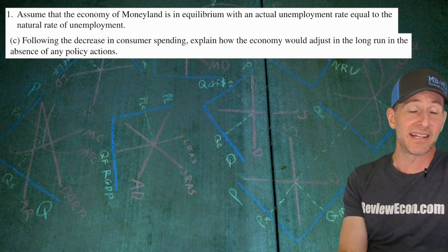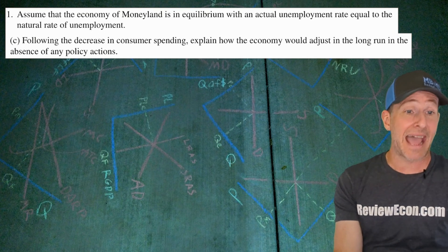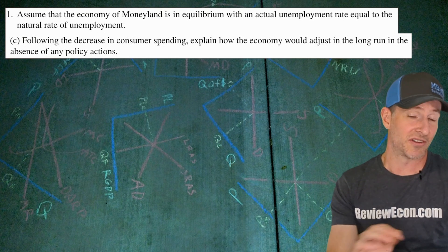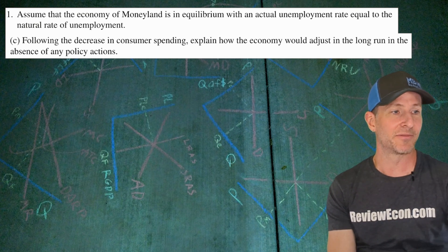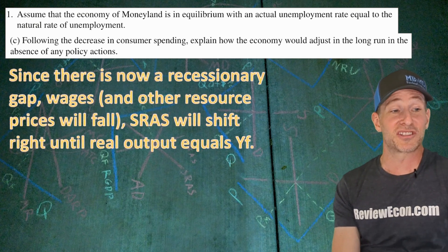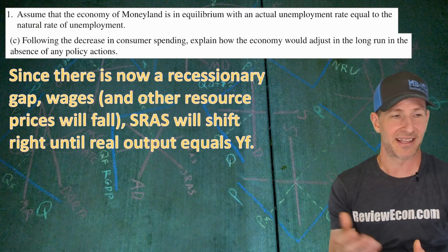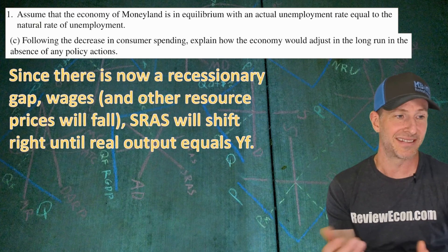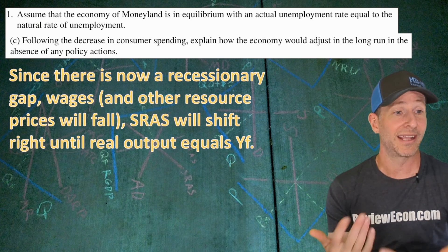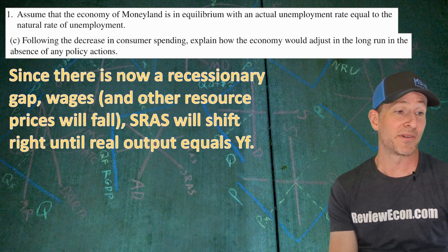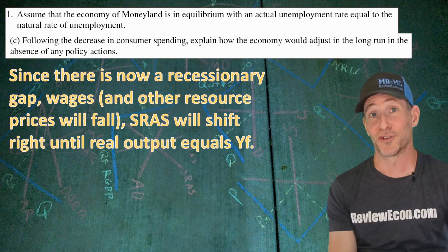Following the decrease in consumer spending, how does the economy adjust in the long run without any policy actions? Since there is now a recessionary gap, wages and other resource prices will fall. That causes the short-run aggregate supply curve to shift to the right due to lower input costs, and that will continue until real output equals YF — the full employment level of output.